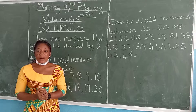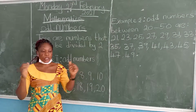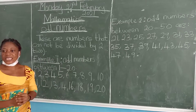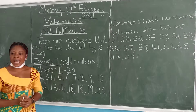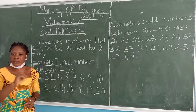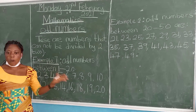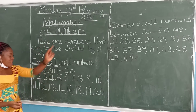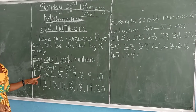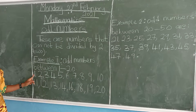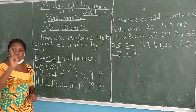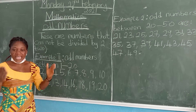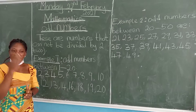To get into today's lesson, we are going to talk about odd numbers. What are odd numbers? Odd numbers are whole numbers that cannot be divided by two — if we divide them by two, there must be a remainder. We have two methods of identifying odd numbers.